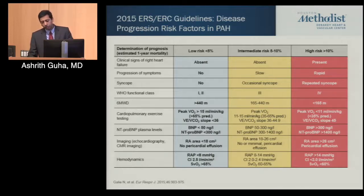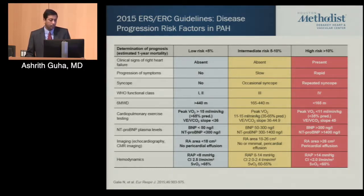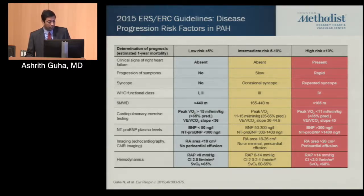Risk stratification helps differentiate patients at higher, intermediate, or low risk of decompensation in the next year. Measures include NT-proBNP, cardiopulmonary exercise test, and six-minute walk — all reflective of RV function.